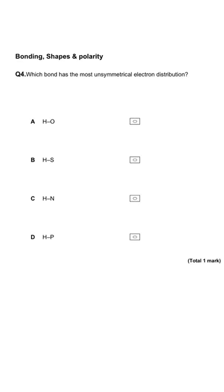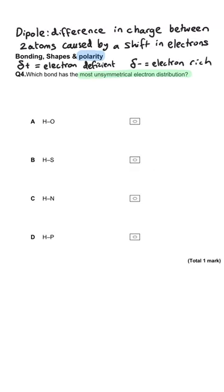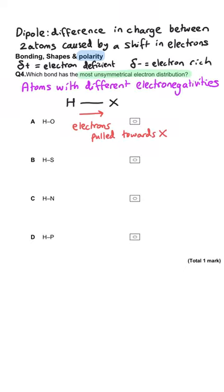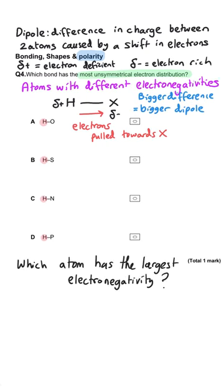Here we're being asked which bond has the most unsymmetrical electron distribution — that's another way of saying which bond has the greatest dipole. Dipoles are caused when two atoms sharing a pair of electrons have different electronegativities. The bigger the difference in electronegativity, the bigger the dipole. Since these bonds all involve hydrogen as one of the two atoms, we're looking for which of the other elements has the greatest electronegativity to give the biggest difference with hydrogen.